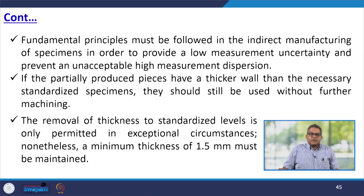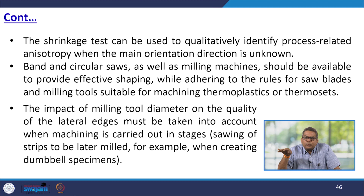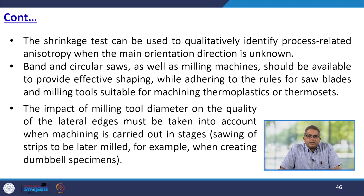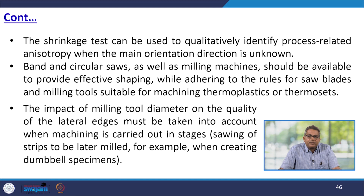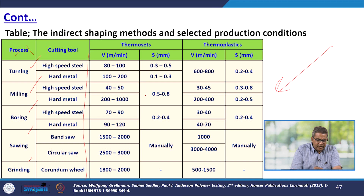The shrinkage test can be used qualitatively to identify process-related anisotropy when the main orientation direction is unknown. Sawing and milling machines should be available to provide effective shaping while adhering to the rules for saw blades and milling tools suitable for machining thermoplastics or thermosets. The impact of milling tool diameter on the quality of lateral edges must be taken into account when machining is carried out in stages — sawing of strips to be later milled, for example when creating the dumbbell specimen. A table enlists indirect shaping methods and selected production conditions like turning, milling, boring, sawing, and grinding, along with cutting tools such as high-speed cutting tools, hard metal, and high-speed steel for thermosets and thermoplastics.